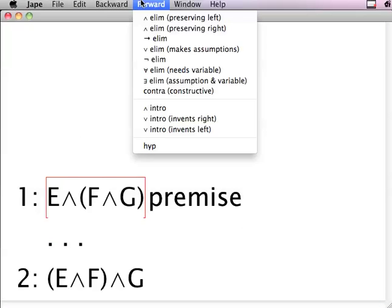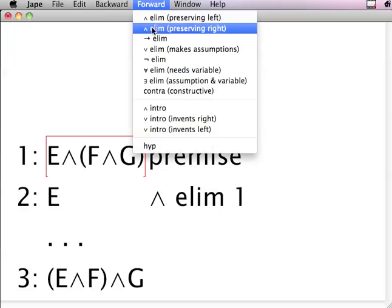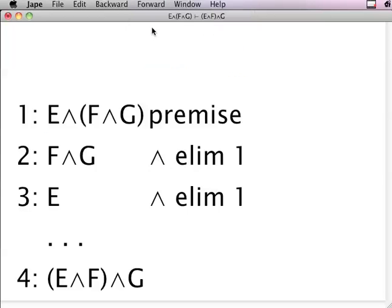So we have this premise. I go forward and, well, from E and this other stuff here in the bracket, I conclude E. I can take the same line and go forward and conclude F and G. Now, if I did it by hand, I would naturally put E, sorry, F and G here. But now when I do it by JAPE, you already notice something different from by doing it by hand. You notice that it squeezed it in between the line we had before and the premise.